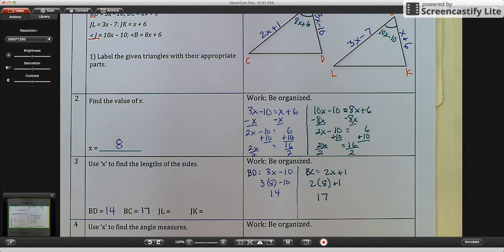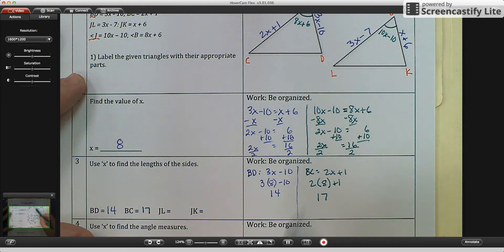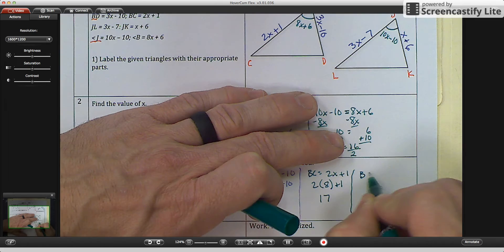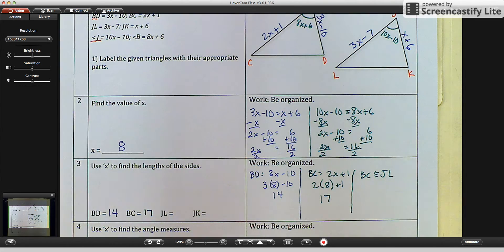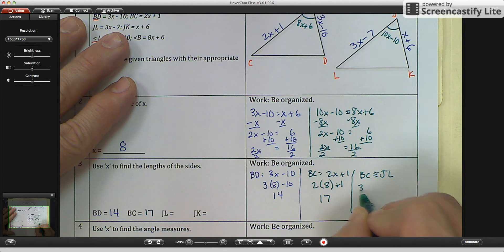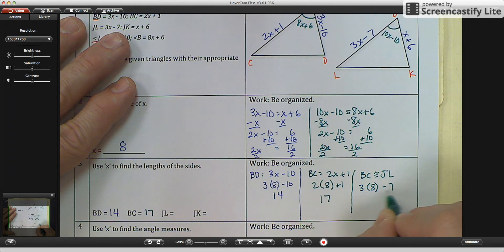We have JL. Now we notice that JL is congruent to BC. So therefore, I would say BC is congruent to JL. So they should be the same. But let's check. 3 times 8 minus 7. 3 times 8 is 24. Minus 7 would be 17.